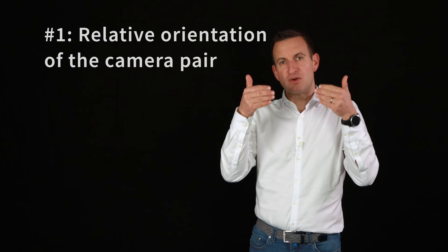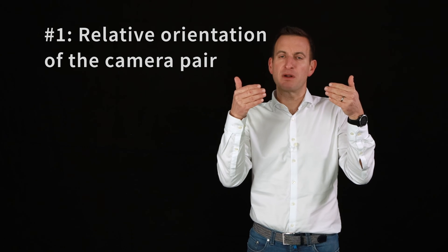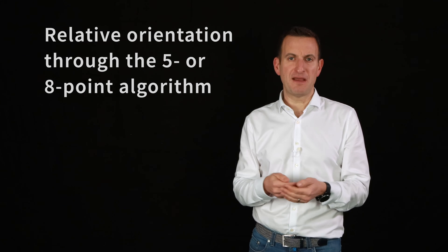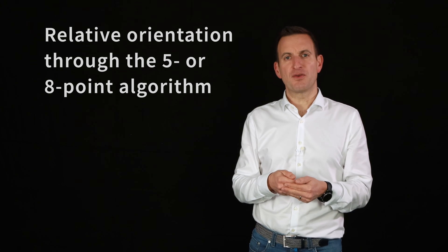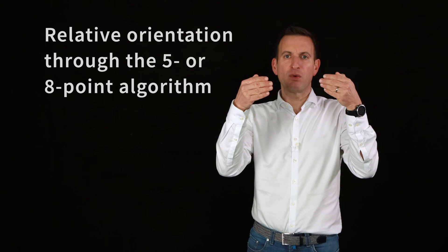And basically three steps are needed for that. The first thing is we need to estimate the relative orientation of the camera pair. That means we need to know where camera two is with respect to camera one. Sometimes we have that information given, then our life is easier, otherwise we need to estimate that. And we can use techniques such as the eight-point algorithm or the five-point algorithm to compute the so-called essential matrix, which encodes where camera two sits with respect to camera one.